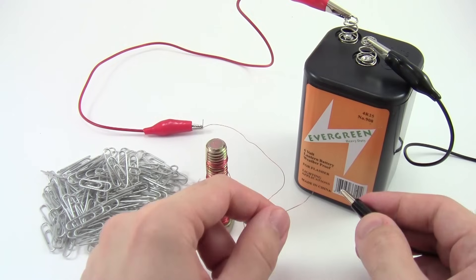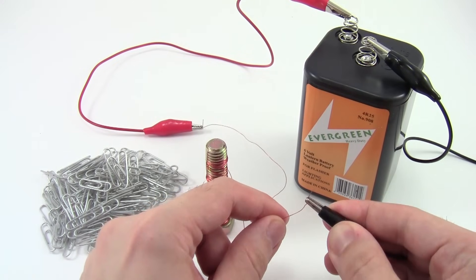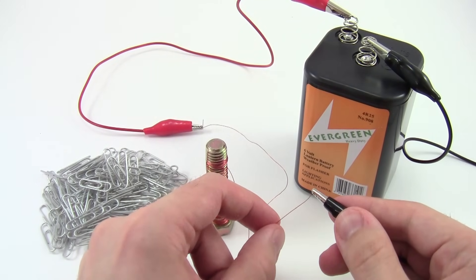Now, use the alligator clips in your kit to connect both ends of the coil to the battery terminals. Make sure you clip onto the copper wire where you sanded off the insulation earlier.